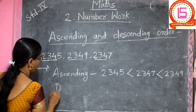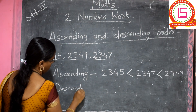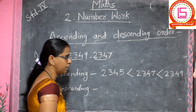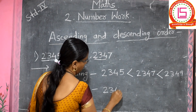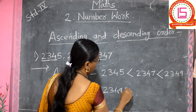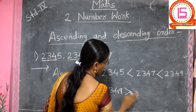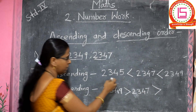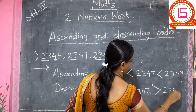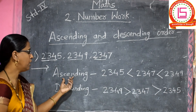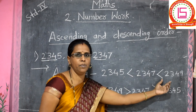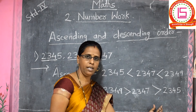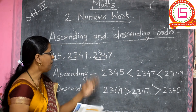In descending order, first we write the bigger number, then smaller, and at last the smallest number. In ascending order we write increasing numbers, and in descending order we write decreasing numbers.